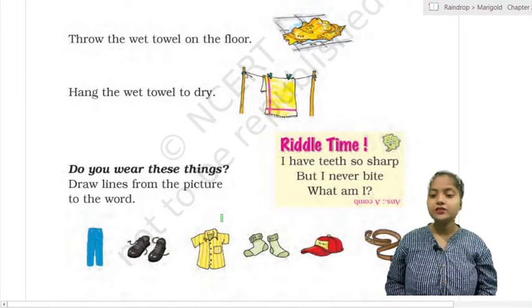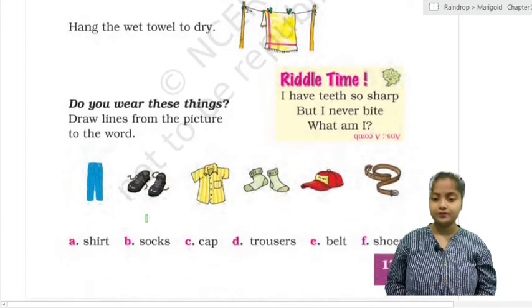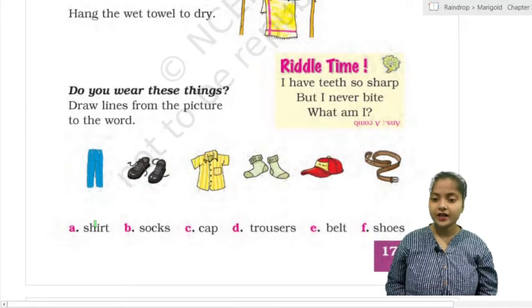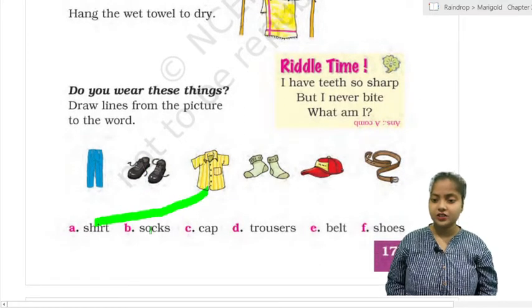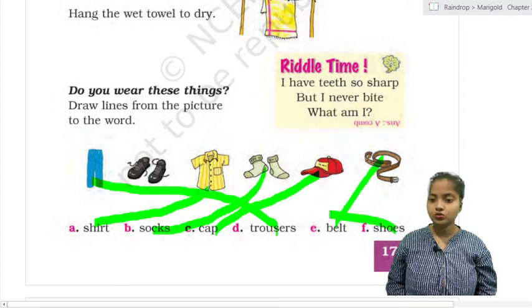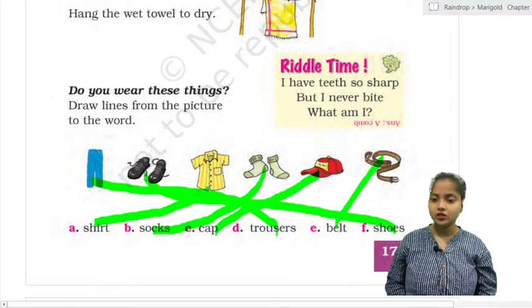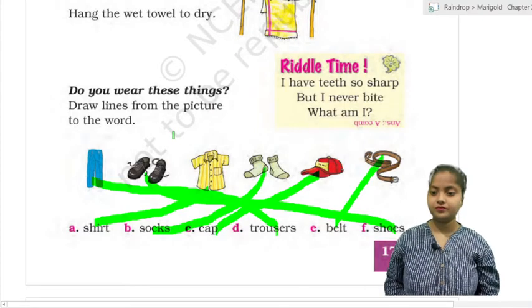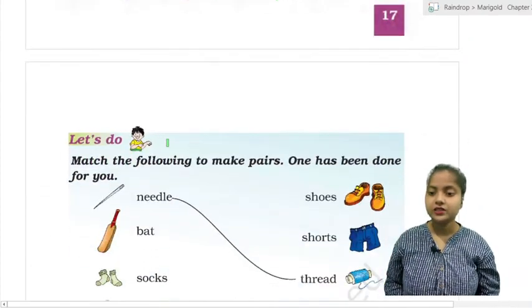Draw lines from the pictures to the words. Where is the shirt? This is shirt. Socks? This is socks. Cap? This is cap. Trouser? This is trouser. Belt? This is belt. Shoes? This is shoes. Okay, students.